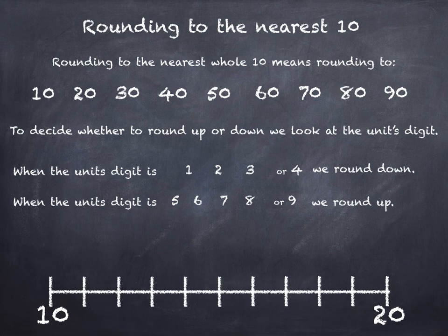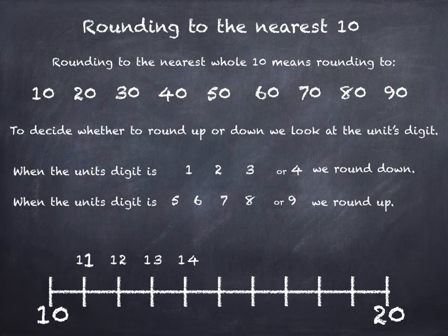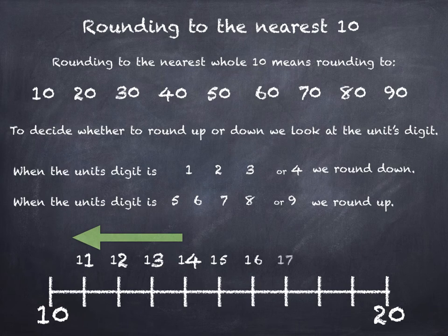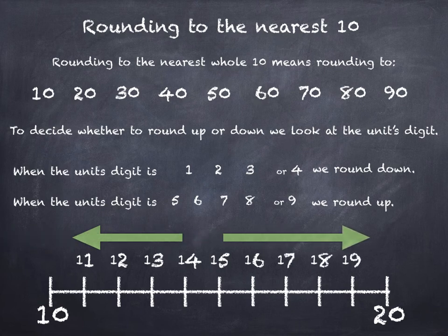Let's look at some numbers between 10 and 20. If we take 11 to 14 we can see that the units digits are 1, 2, 3 and 4, so all those numbers will round down. And if we take 15 to 19 we can see the units digits are 5, 6, 7, 8 and 9, and all these numbers will round up.